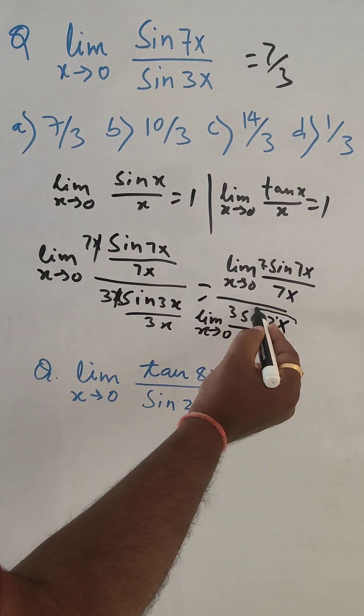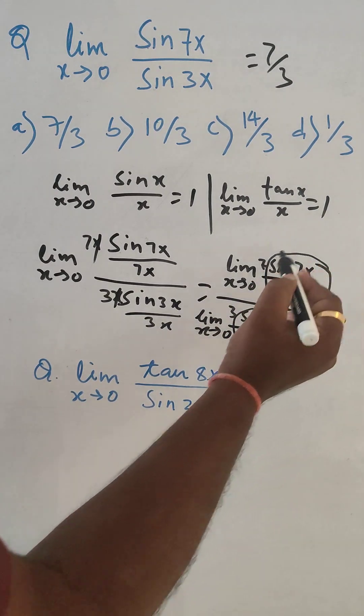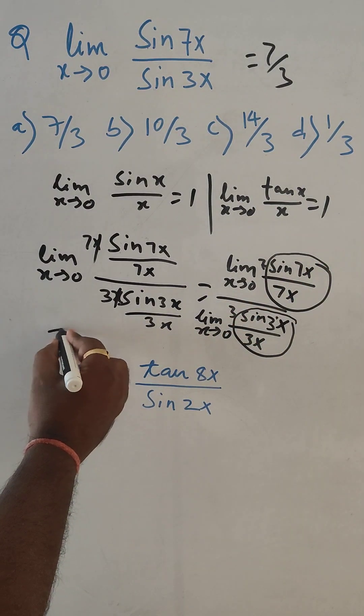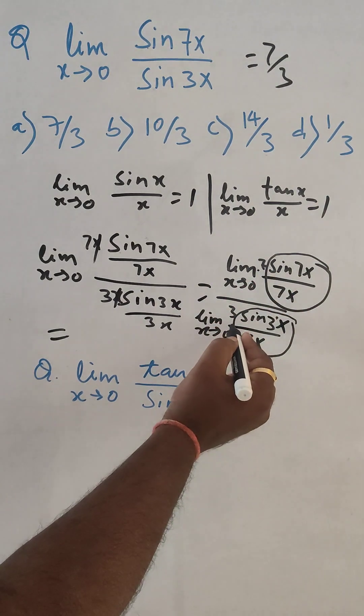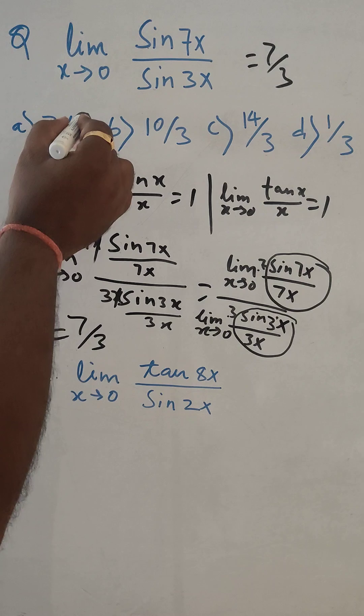So this portion will be 1, this portion will be 1. So answer over here is 7 by 3.